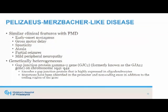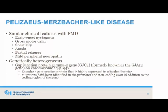Pelizaeus-Merzbacher-like disease has similar clinical features — hence the name — of early onset nystagmus, gross motor delay, spasticity, ataxia, partial seizures, and a mild peripheral neuropathy. However, PMLD is not associated with mutations or duplications of PLP1. This disorder appears to be genetically heterogeneous. Therefore, sequencing of only the PLP1 gene may result in delayed or misdiagnosis. It is important to think about other mutations such as GJC2, and there are others on the differential diagnosis of hypomyelinating disorders that may have some overlapping clinical features.